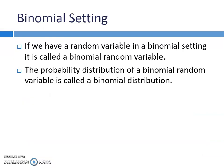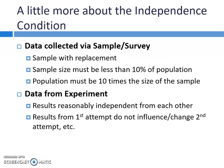If we have a random variable in a binomial setting, it is called a binomial random variable. It's still random, just now binomial random. The probability distribution of a binomial random variable is going to be called a binomial distribution — it's just a specific type of probability distribution.